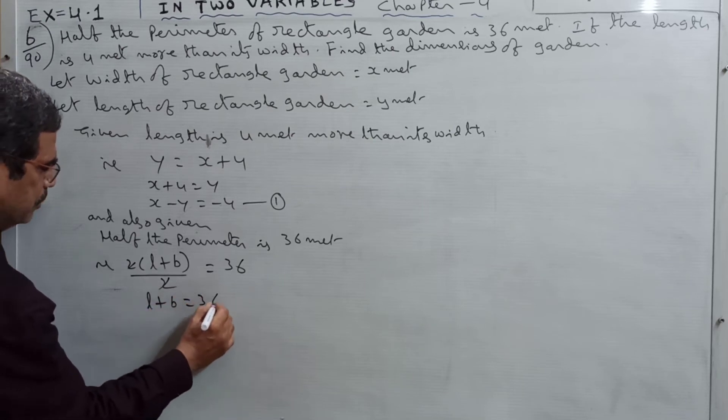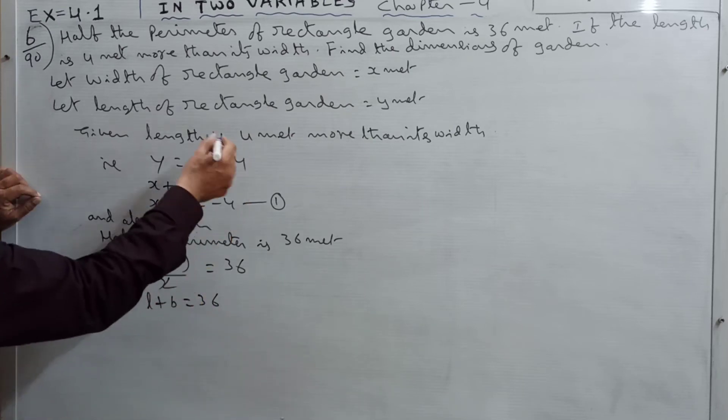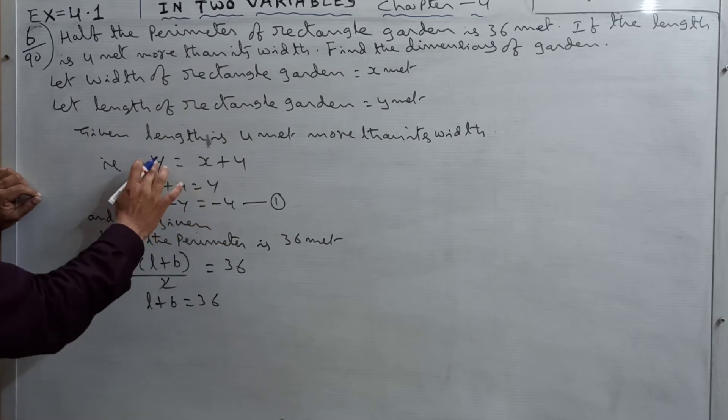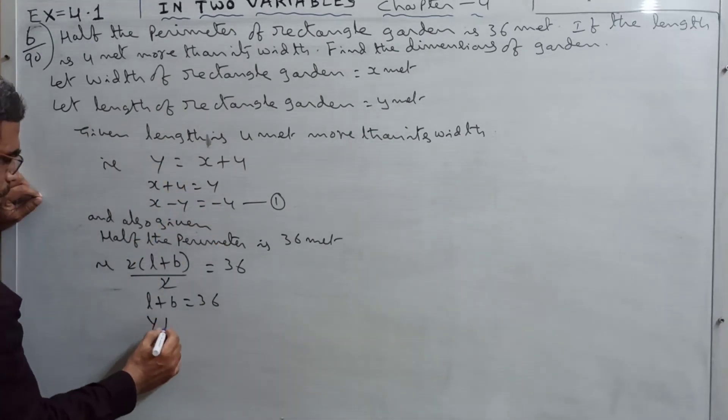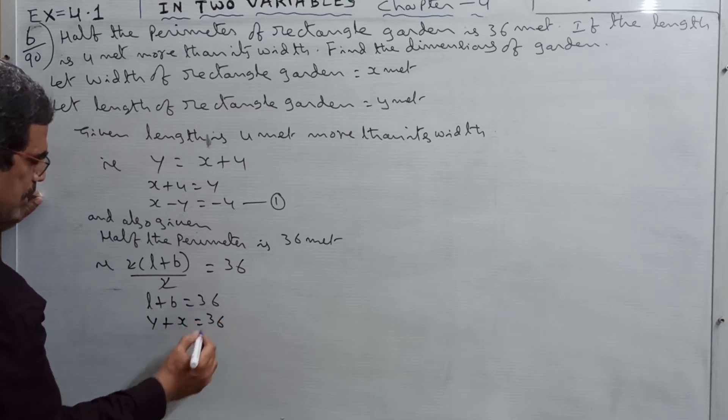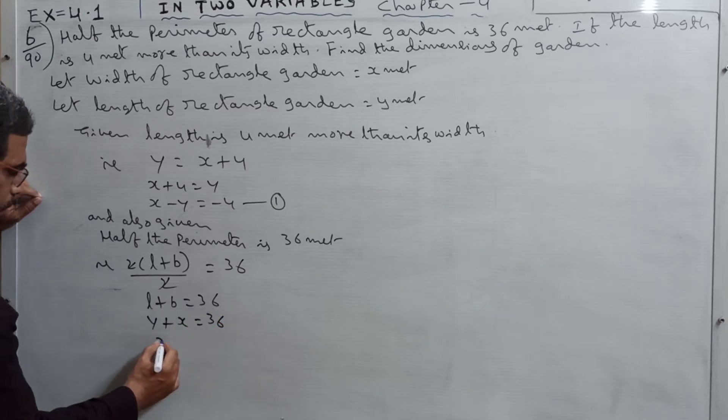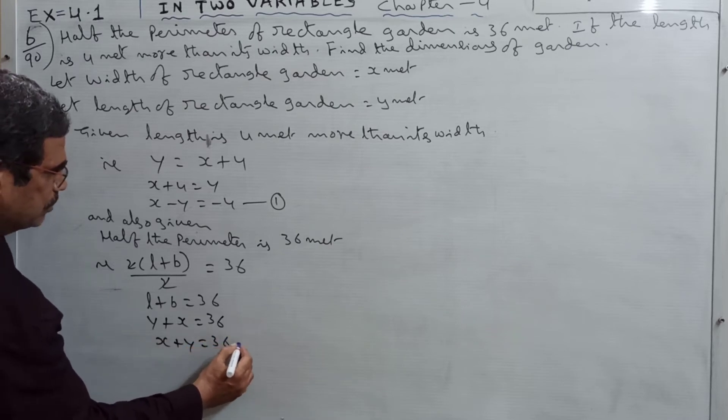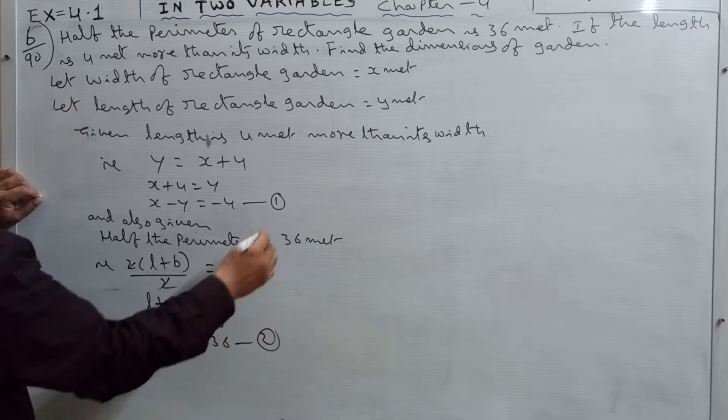l plus b is equal to 36. l is length which is y, breadth is x, so x plus y is equal to 36. This is the second equation.